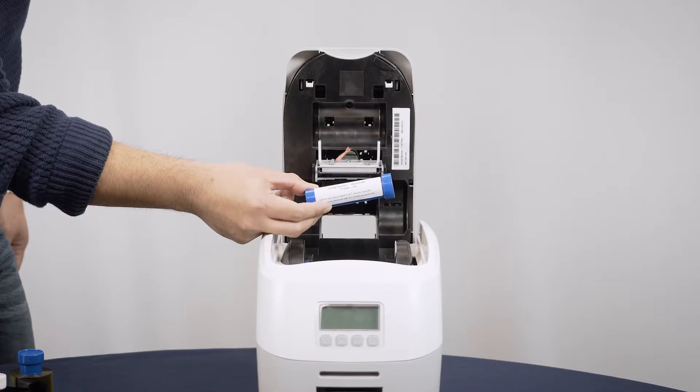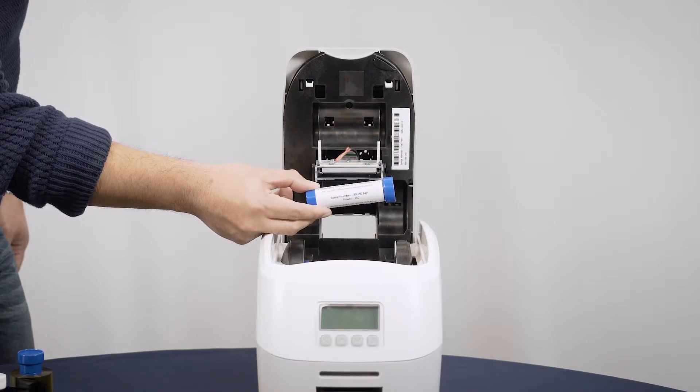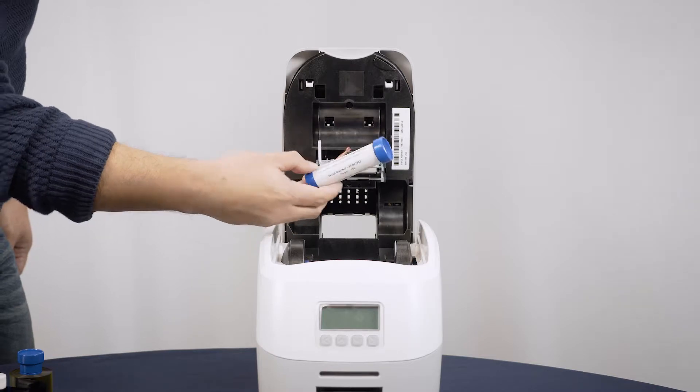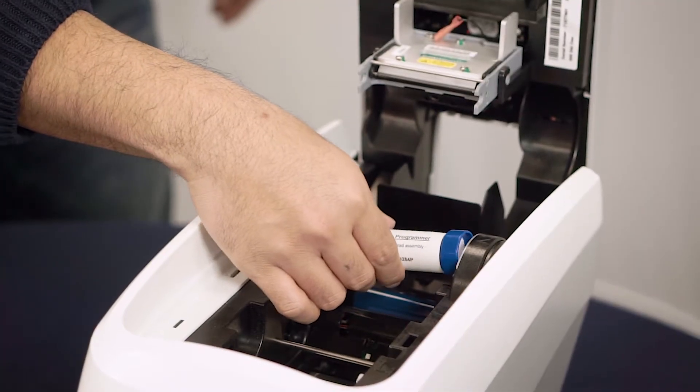Take the print head calibration programmer that came with your new print head and place it in the rear die film roller slot as shown.